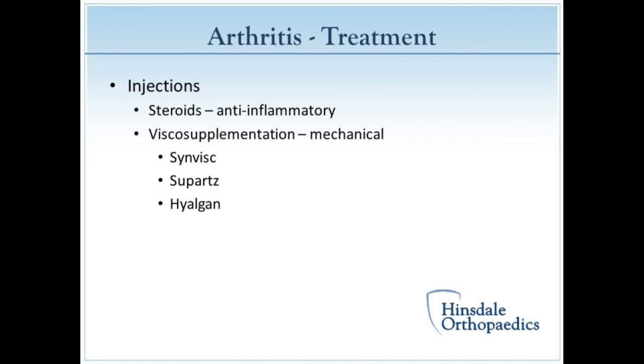We also use NSAIDs — nonsteroidal anti-inflammatory drugs. Some common ones are Advil, Aleve, and Motrin. Those can be helpful in minimizing inflammation, which is one of the main causes of pain from arthritis in the knee. There are also prescription anti-inflammatory medications like Brelofen, Voltaren, Mobic, and Meloxicam. The downside is that they have side effects, especially in higher doses or for long periods — they can potentially cause liver or kidney toxicity long-term. If you're taking those for more than six months, you should check with your regular doctor to have liver and kidney functions monitored.